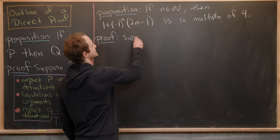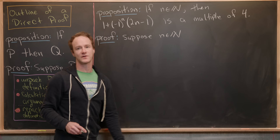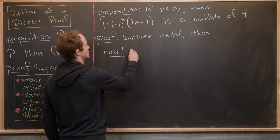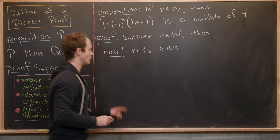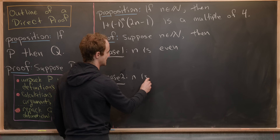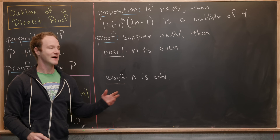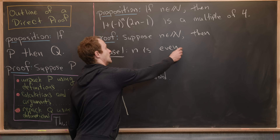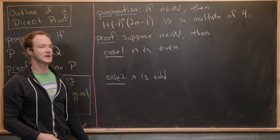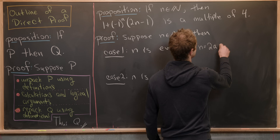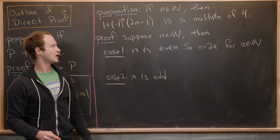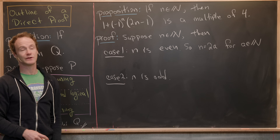We suppose N is a natural number. We see there are two cases: Case 1 is N is even, Case 2 is N is odd. Using the definition of an even number, if N is even then N = 2a for some natural number a.